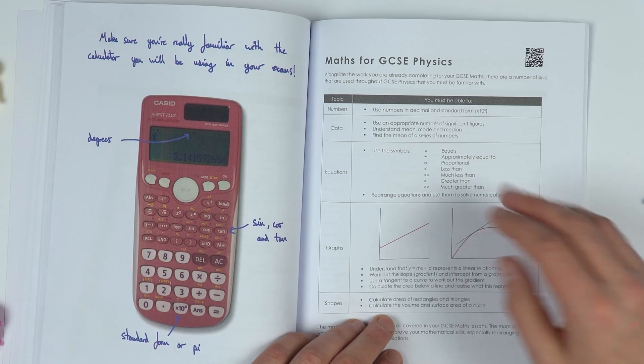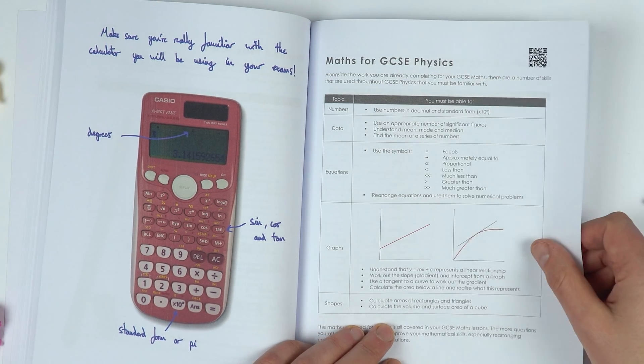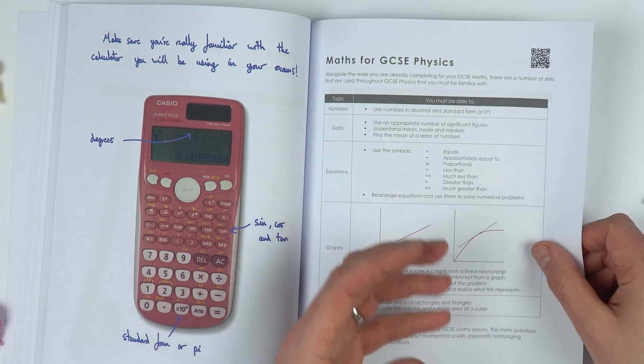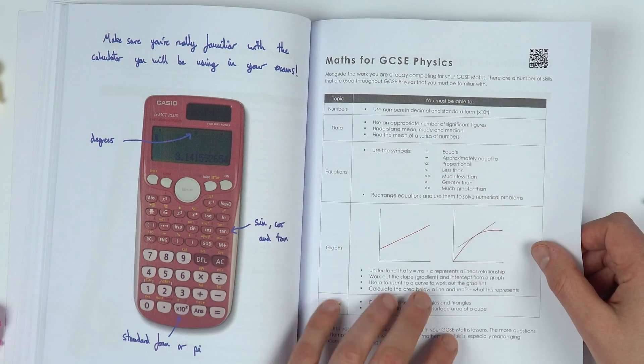I have some information about the maths for physics, and again the QR code at the top links to the page at GCSE physics online for more practical advice and worked examples and video explanations of everything you see here.